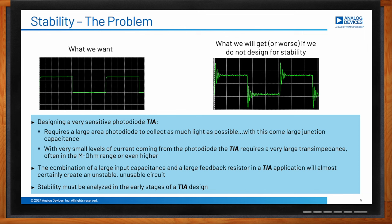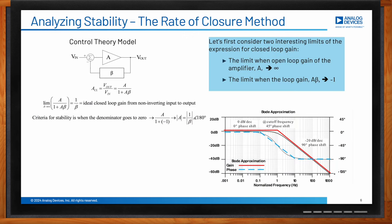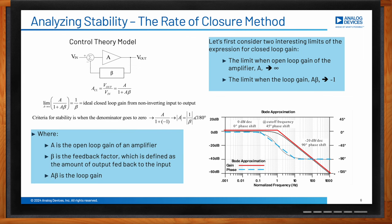A common method to analyze stability is the rate of closure method, or ROC. From a simple block diagram, we solve for the closed-loop gain V_out/V_in, where A is the open-loop gain and β is the feedback factor — the amount of output fed back to the input. The product Aβ is the loop gain. The closed-loop gain equals A divided by (1 + Aβ).